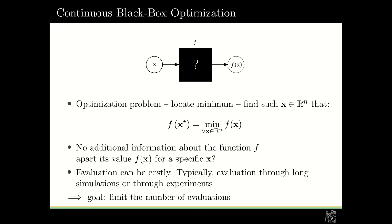So what is continuous black box optimization? It is solving optimization problems to locate a minimum of a function. And what makes it a black box is that usually this function is a black box function, which means that we don't have any additional information about the function, only the value at a specific point. In some cases the evaluation of such function can be costly, typically when evaluation goes through long simulations or through experiments. So the goal is to limit the number of evaluations of such function.